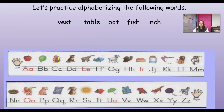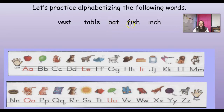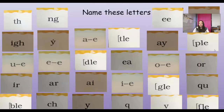What about C? No. D? E? F? Yes, we have fish. So so far we have bat and fish. How about G, H, I? Yes, we have inch. Then J, K, L, M, N, O... T? Yes, we have table. And then of course V comes after, so then it would be vest. So if we put these in ABC order it would be bat, fish, inch, table, and vest.